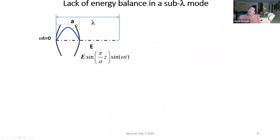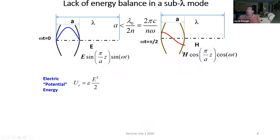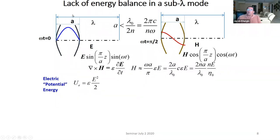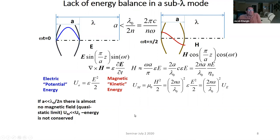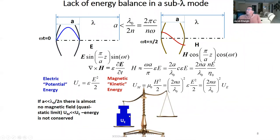So what happens if we actually try to squeeze our mode and it becomes smaller than lambda? Everything stays the same for electric field and magnetic field, but now you run out of your integration volume. Instead of integrating over a few lambdas, you integrate over this characteristic size A, which is less than lambda. So the magnetic energy is obviously now too small. This is your static limit - we all know it. When your dimensions are sub-lambda, you basically don't have magnetic field. So energy can no longer be conserved.